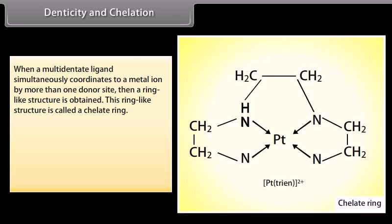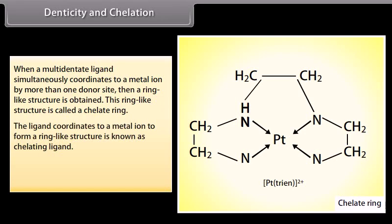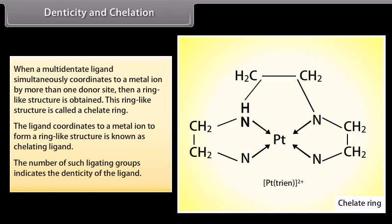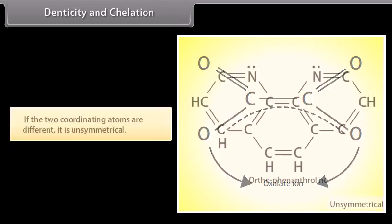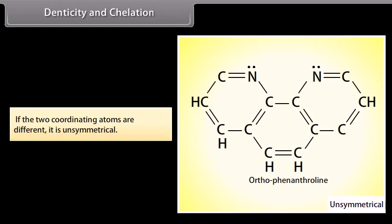Denticity and Chelation. When a multidentate ligand simultaneously coordinates to a metal ion by more than one donor site, a ring-like structure is obtained. This ring-like structure is called a chelate ring. [Pt(trien)]2+ is an example of chelation. The ligand that coordinates to a metal ion to form a ring-like structure is known as a chelating ligand. The number of such ligating groups indicates the denticity of the ligand. A bidentate ligand is symmetrical if the two coordinating atoms are the same; if different, it is unsymmetrical.